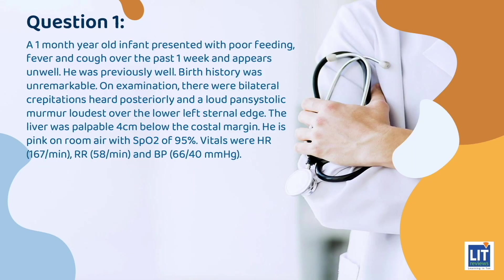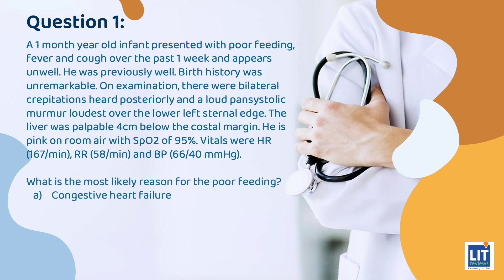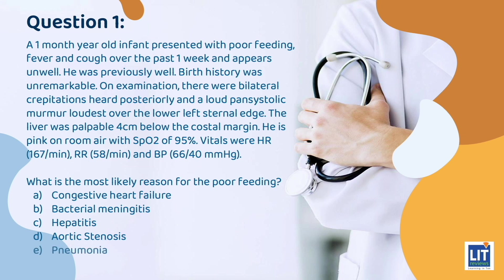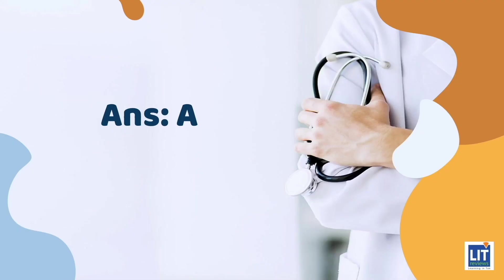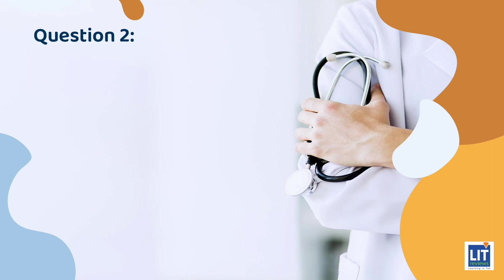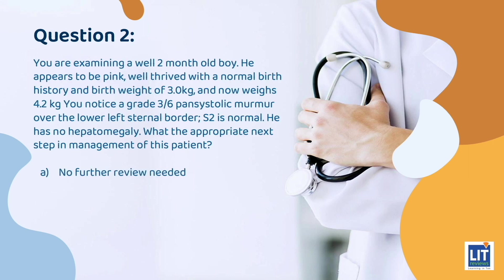Question 1: A one-month-old infant presents with poor feeding, fever, and cough over the past one week and appears unwell. He was previously well with an unremarkable birth history. On examination, there were bilateral crepitations heard posteriorly and a loud pan-systolic murmur loudest over the lower left sternal edge. The liver was palpable 4cm below the costal margin, and he is pink on room air with SpO2 of 95%. Vitals: heart rate 167/min, respiratory rate 58/min, blood pressure 66/40. What is the most likely reason for the poor feeding? The answer is A — congestive heart failure.